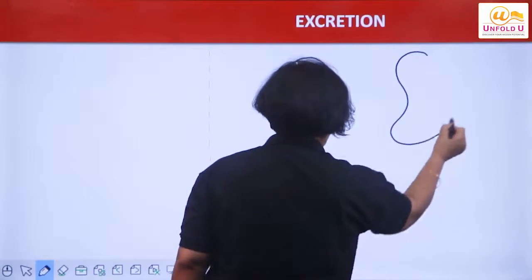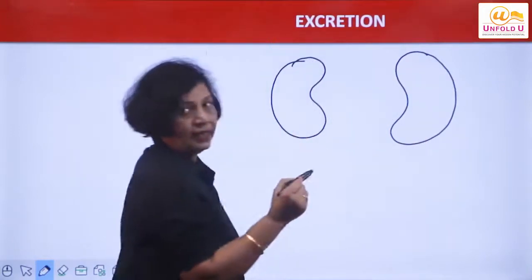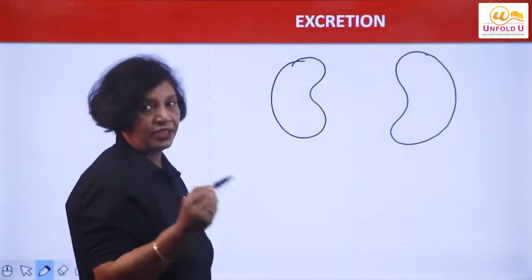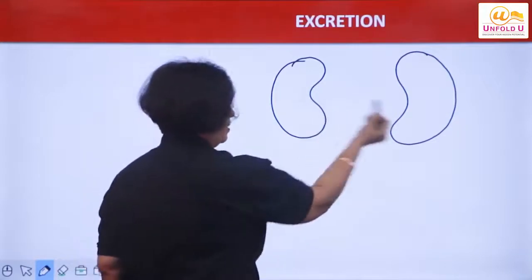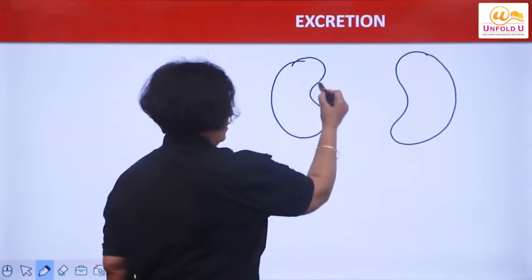These are, we have a pair of kidneys. A pair of kidneys is present in all human beings. This is a pair of kidneys.